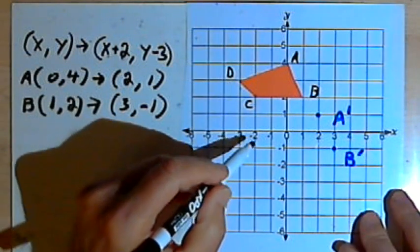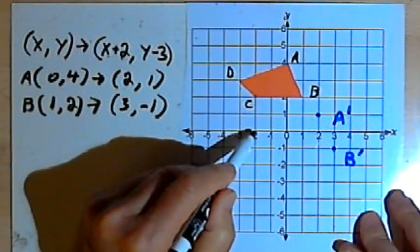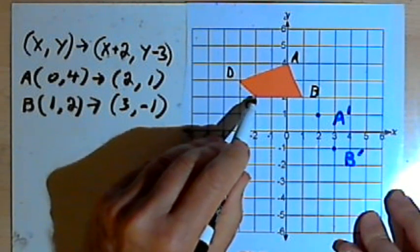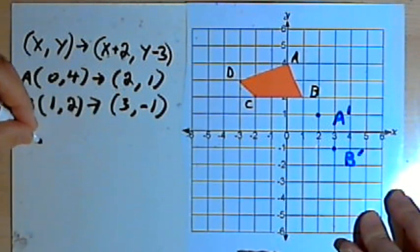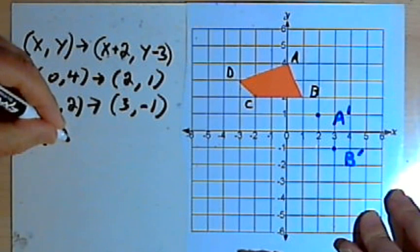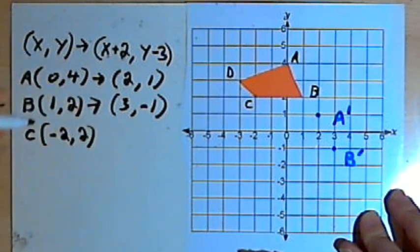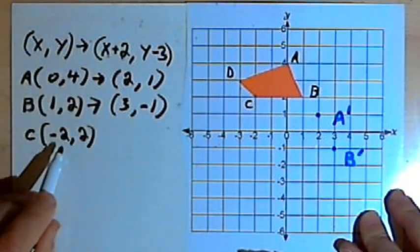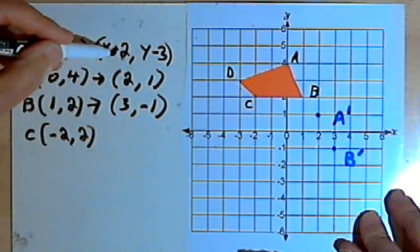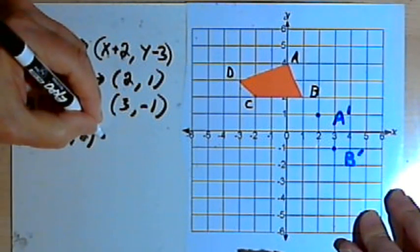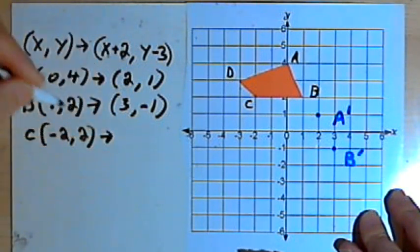Let's see where point C is. Point C is located at x equals negative 2 and y equals 2. So C is (-2, 2). I'll take the negative 2, the x-coordinate, and add 2 more to it. So -2 plus 2 is 0.